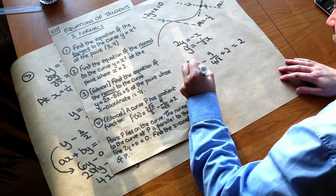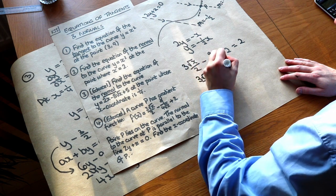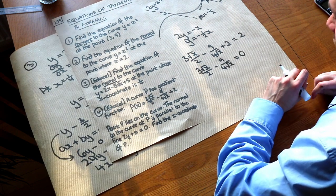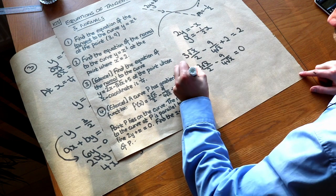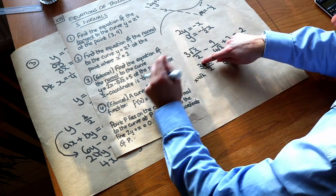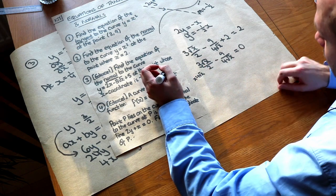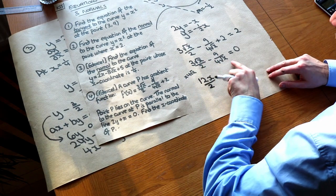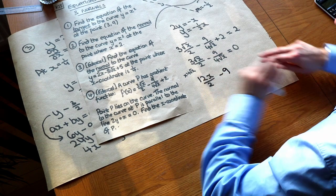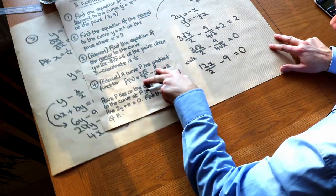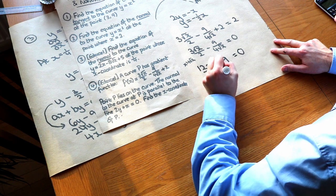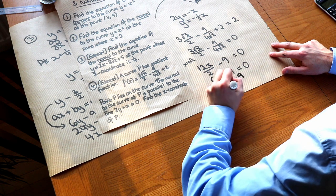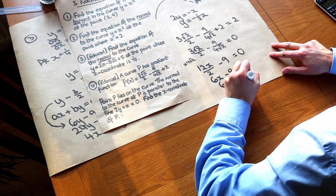Setting the gradient function equal to 2: 3 root x over 2 minus 9 over (4 root x) plus 2 equals 2. Subtracting 2 from both sides: 3 root x over 2 minus 9 over (4 root x) equals 0. Multiplying through by 4 root x to clear fractions: 12x over 2 minus 9 equals 0, which simplifies to 6x minus 9 equals 0. Therefore 6x equals 9, and x equals 9 over 6, which is 1.5.